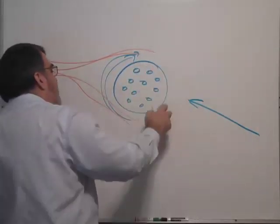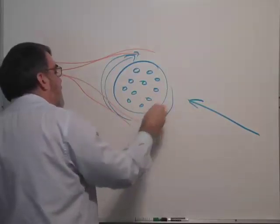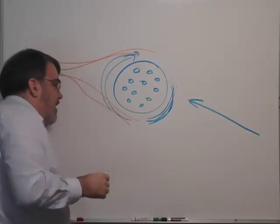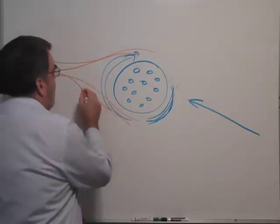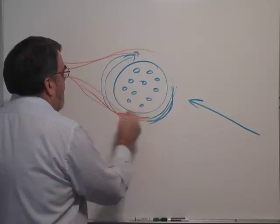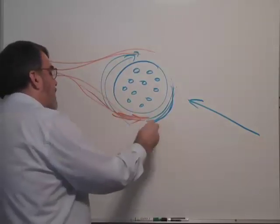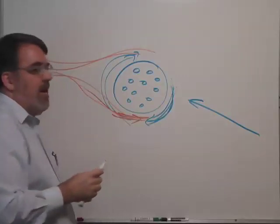So the air on the backside of the ball is coming around the front here and it runs into the air on the bottom side of the ball that's going this way. So you have onrushing air and this air collides on the bottom.